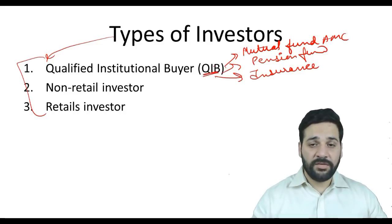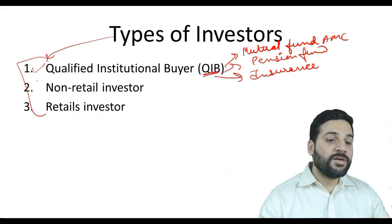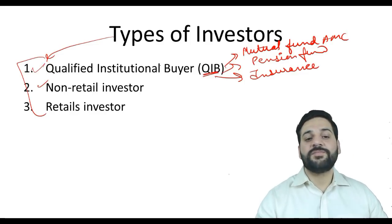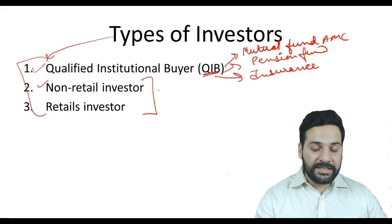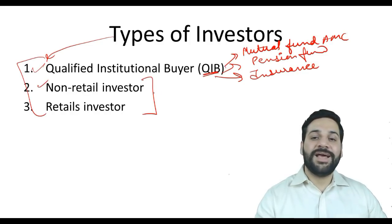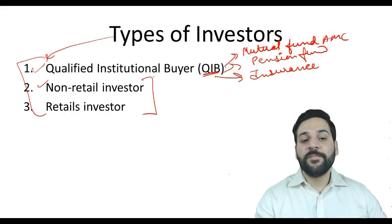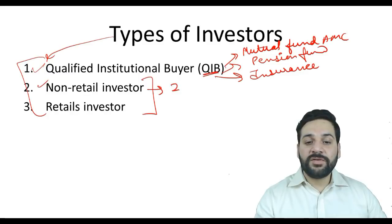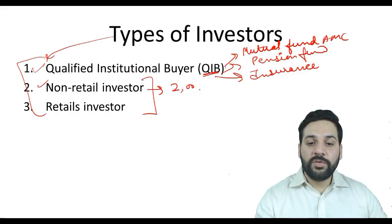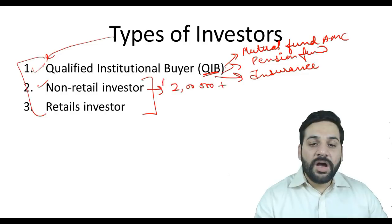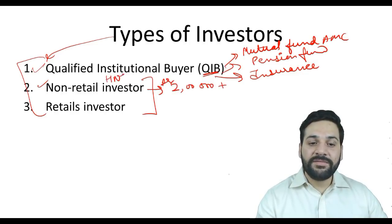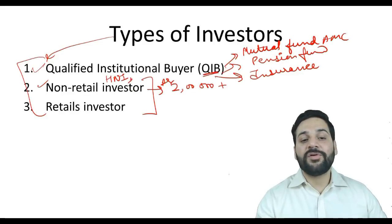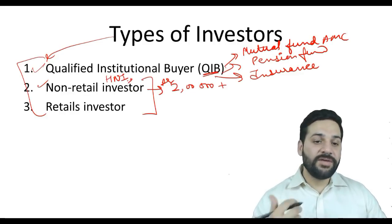QIBs need to be registered with SEBI. Then there are non-retail investors — this is really important. As per the latest SEBI ICDR regulations, an investor who invests two lakh rupees or more is a non-retail investor. We also call them a High Net Worth Individual, or HNI, and they are also referred to as a non-institutional investor.